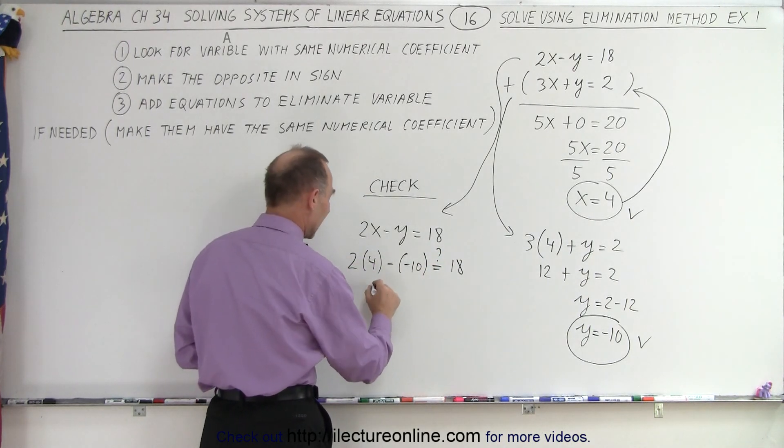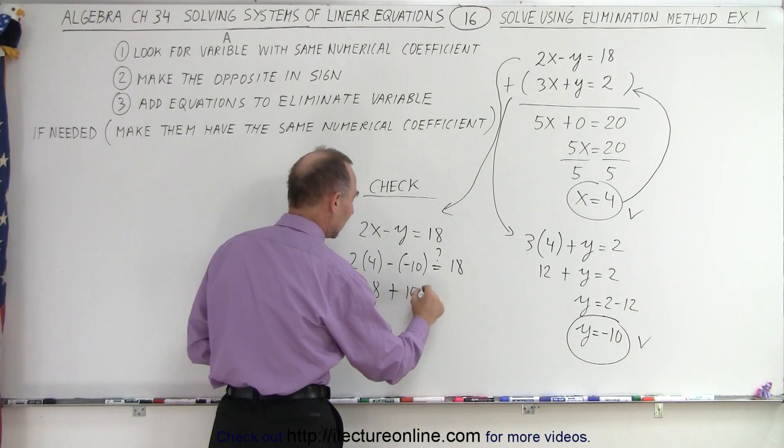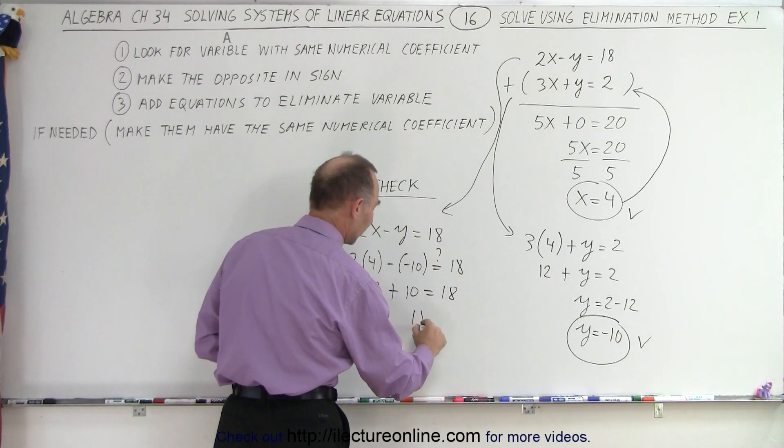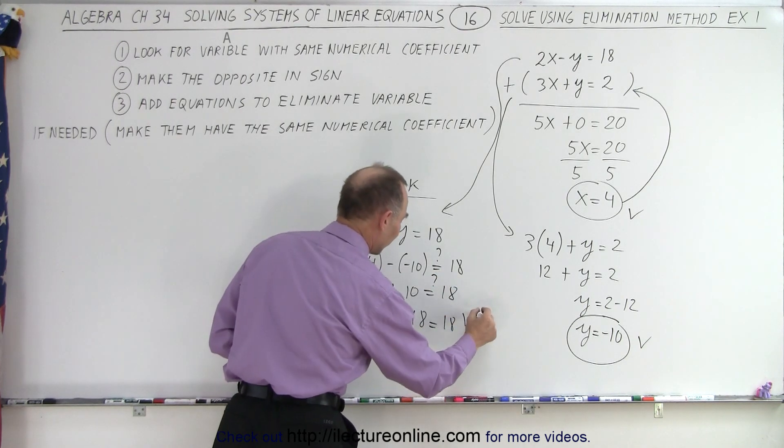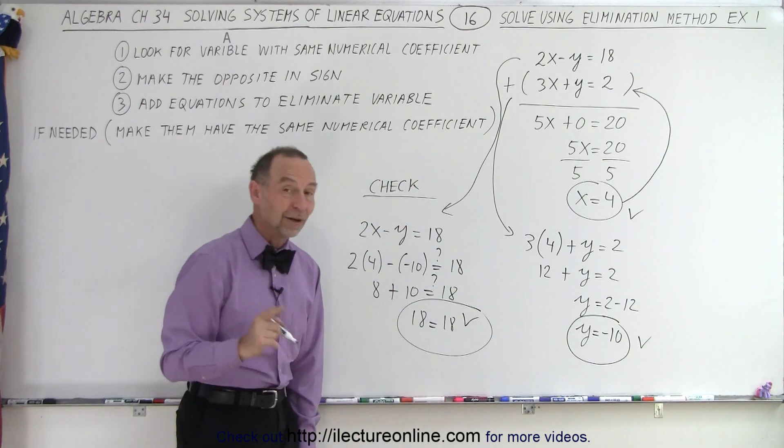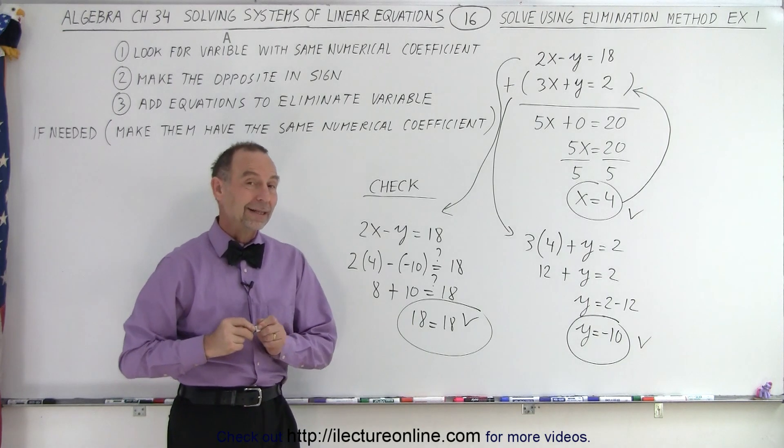So here we get 8 minus times the minus, which is plus 10, equals 18. And sure enough, 18 equals 18. Of course, these are all question marks. But finally, we realize, yes, they are. So we now know that we did the problem correctly.